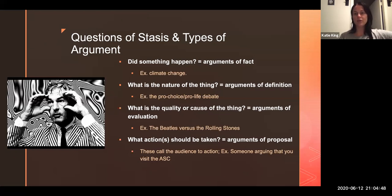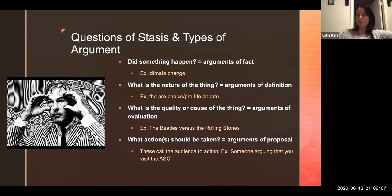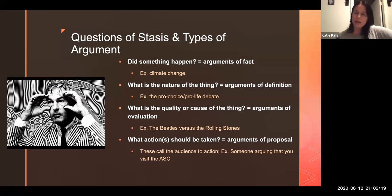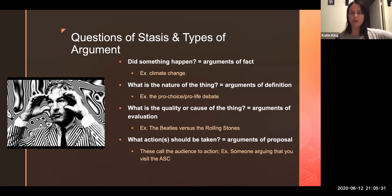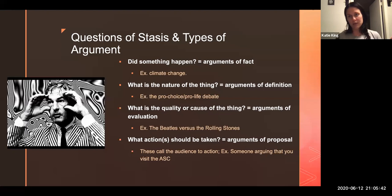The next question of stasis is: what is the nature of the thing? Those are arguments of definition. A really easy example is the pro-choice/pro-life debate. If you think life begins at conception, then you're going to define an embryo, a fetus, or a zygote at any stage as a living human child. If you believe life begins at birth, then you're more likely to be swayed to the pro-choice side — that it's not a human until it is actually a living thing outside of the womb. And arguments of definition will lead us to causal arguments and deliberative arguments.